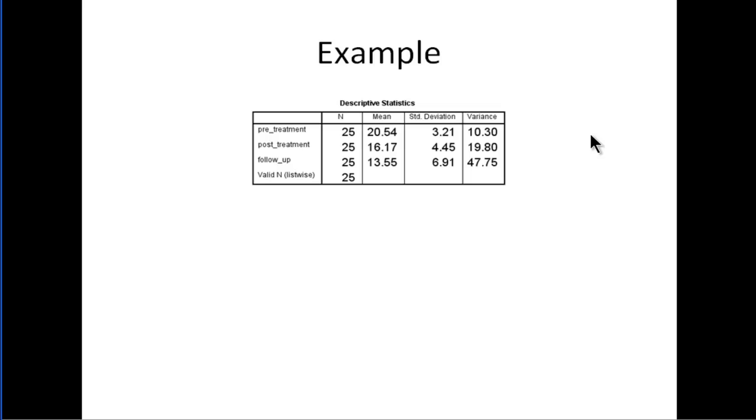This is because people respond to the treatment differentially. Some people respond really well and some people don't respond well at all, and that causes variability in depression scores. Whereas at pre-treatment, pretty much everyone is depressed roughly to the same degree—they're all clinically depressed. They get the treatment, time elapses, and they respond differentially, so that causes variances alone to be different from pre-treatment, post-treatment to follow-up.